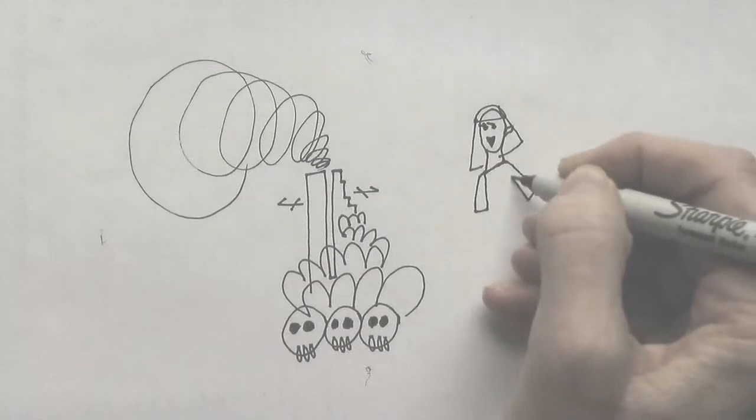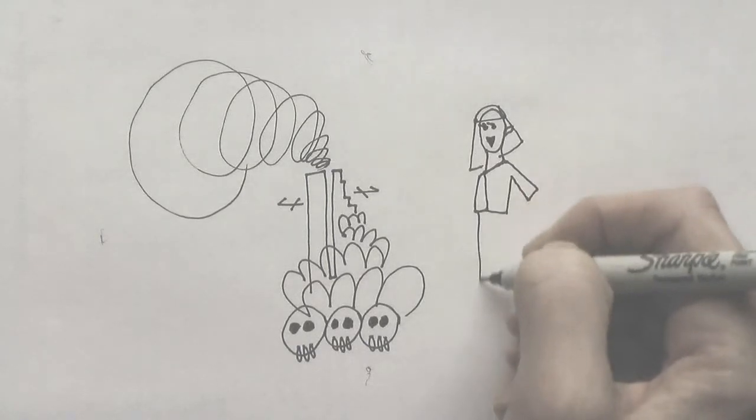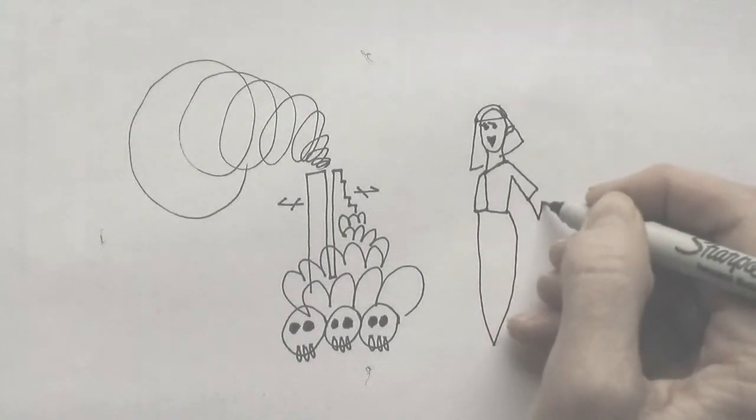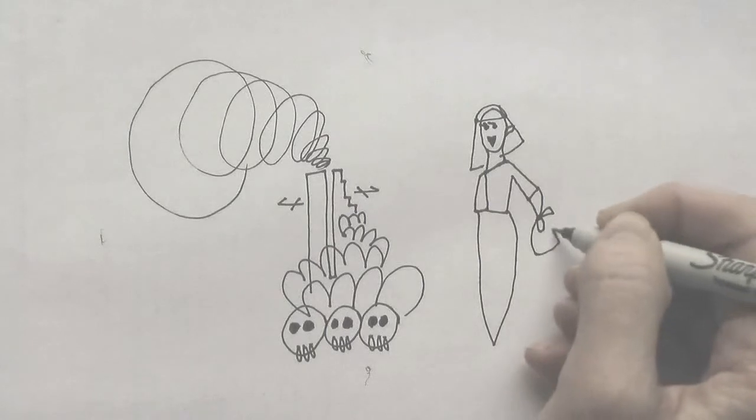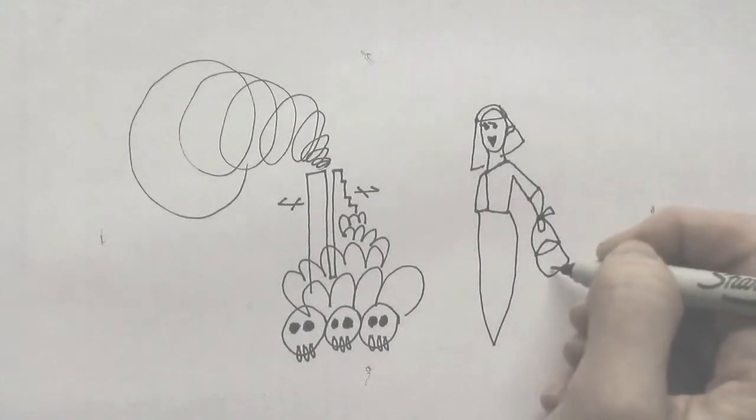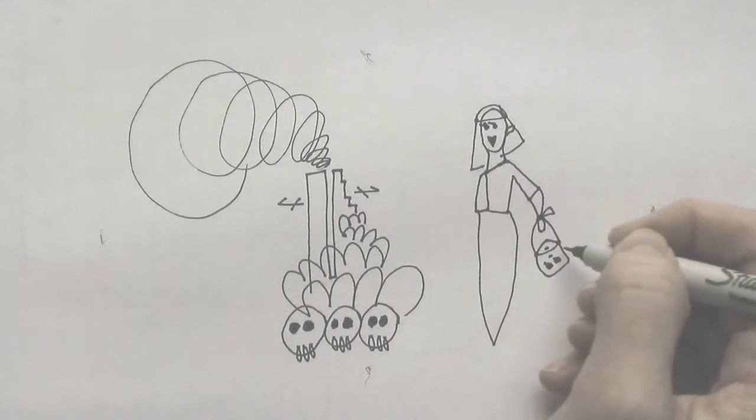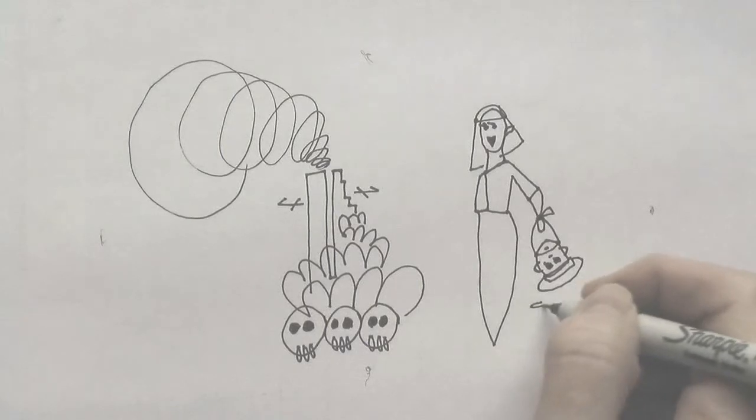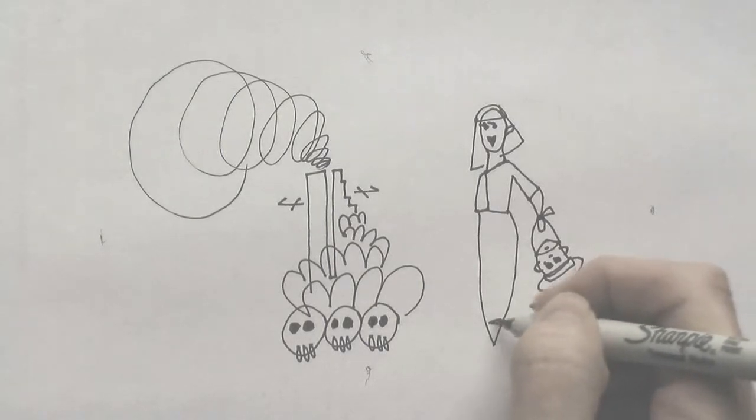Somewhere in sands of the desert, a shape with lion body and the head of a man, a gaze blank and pitiless as the sun, is moving its slow thighs, while all about it reel shadows of the indignant desert birds.